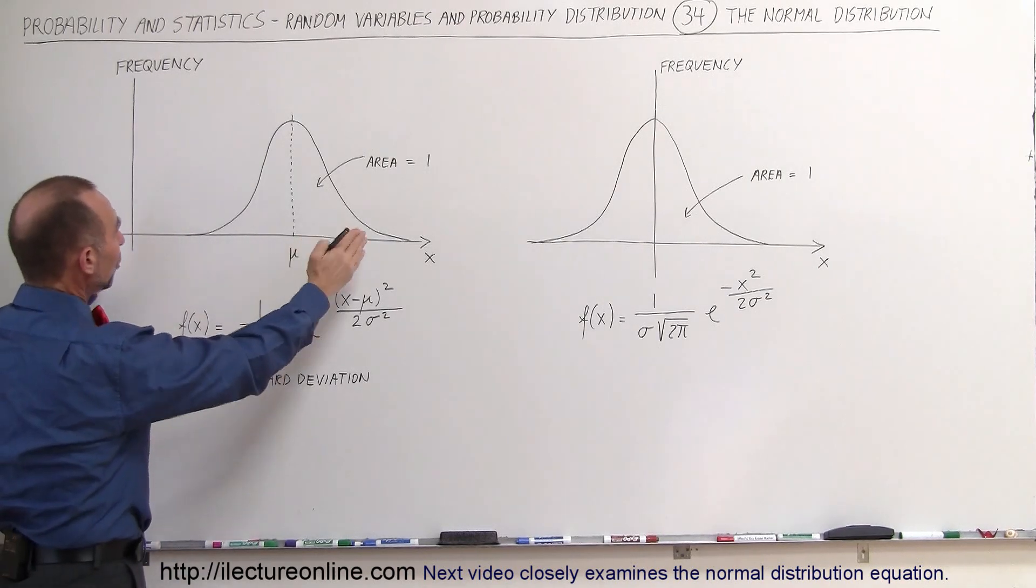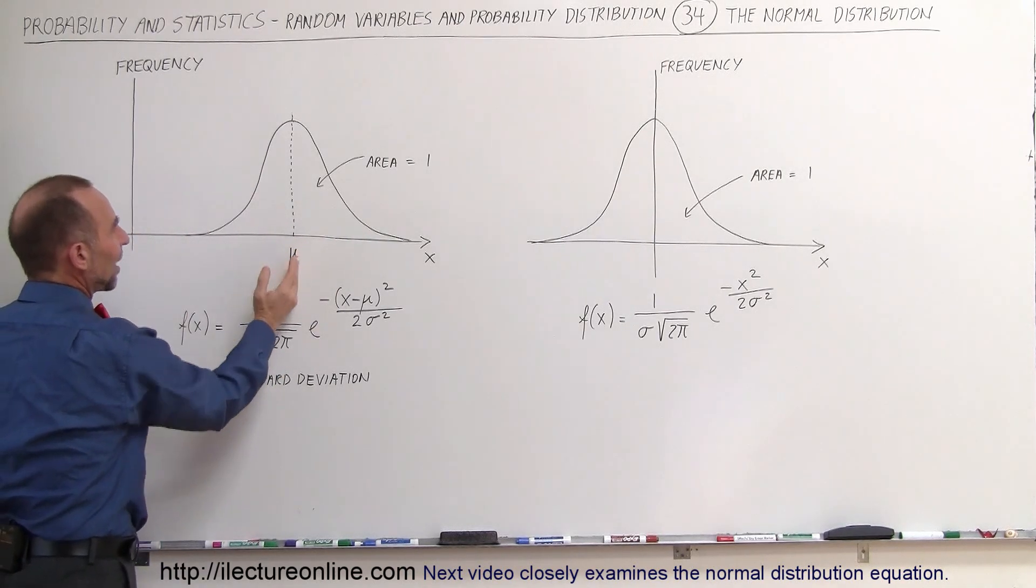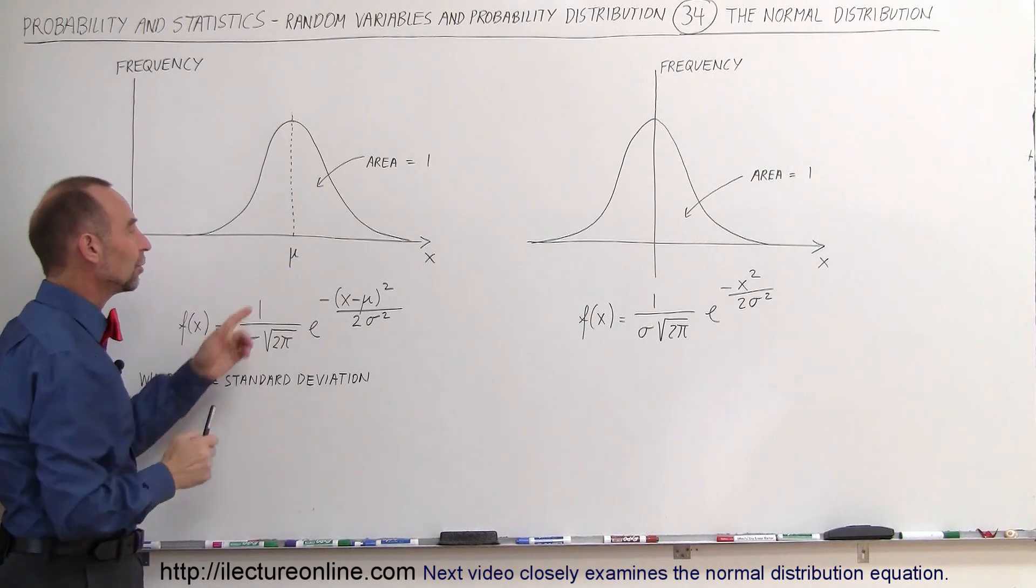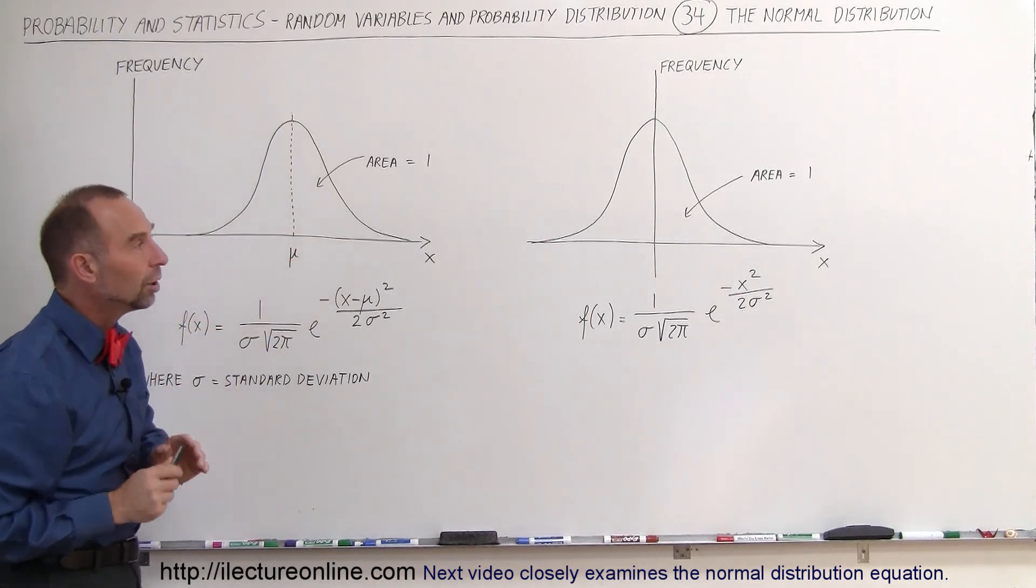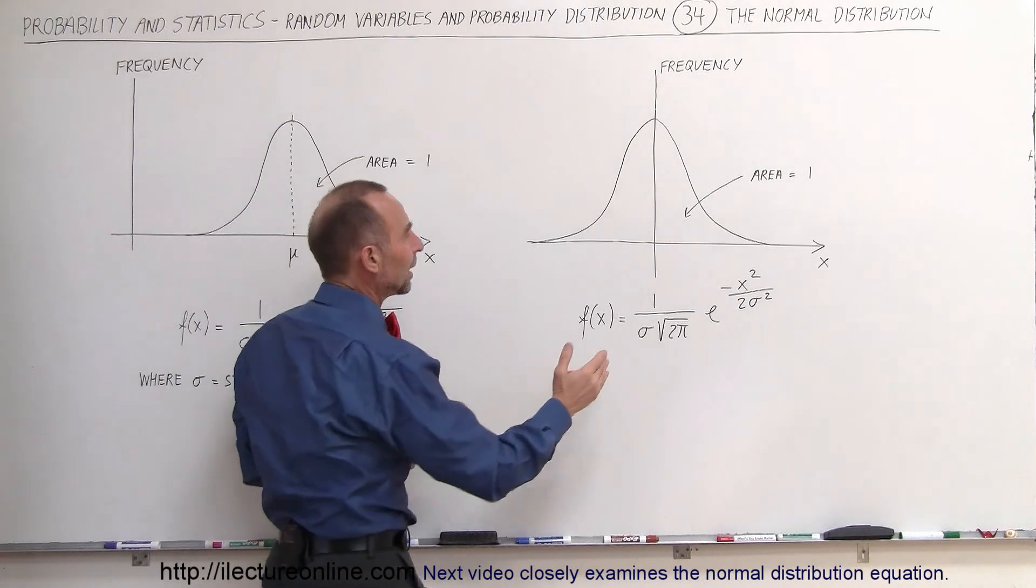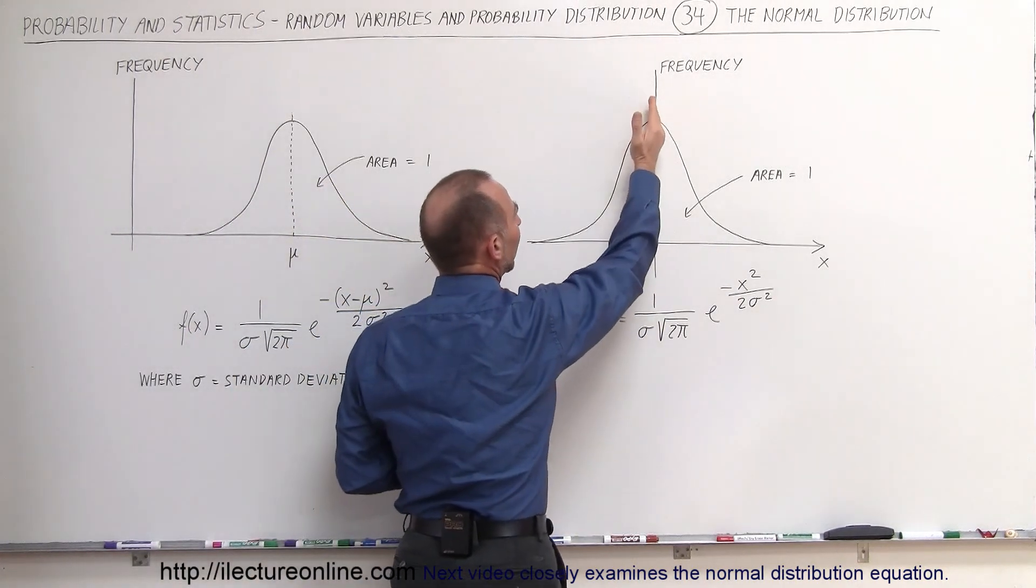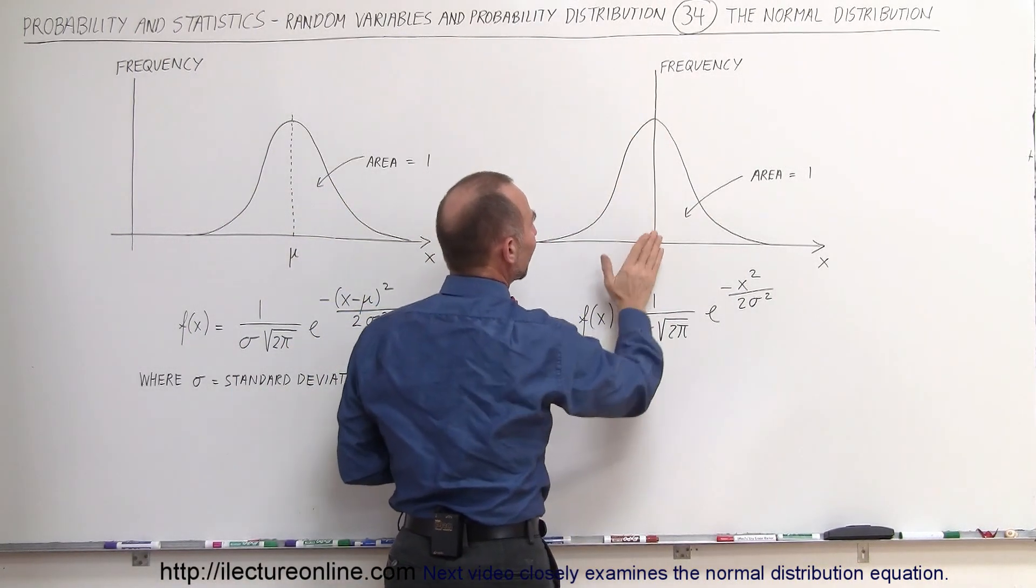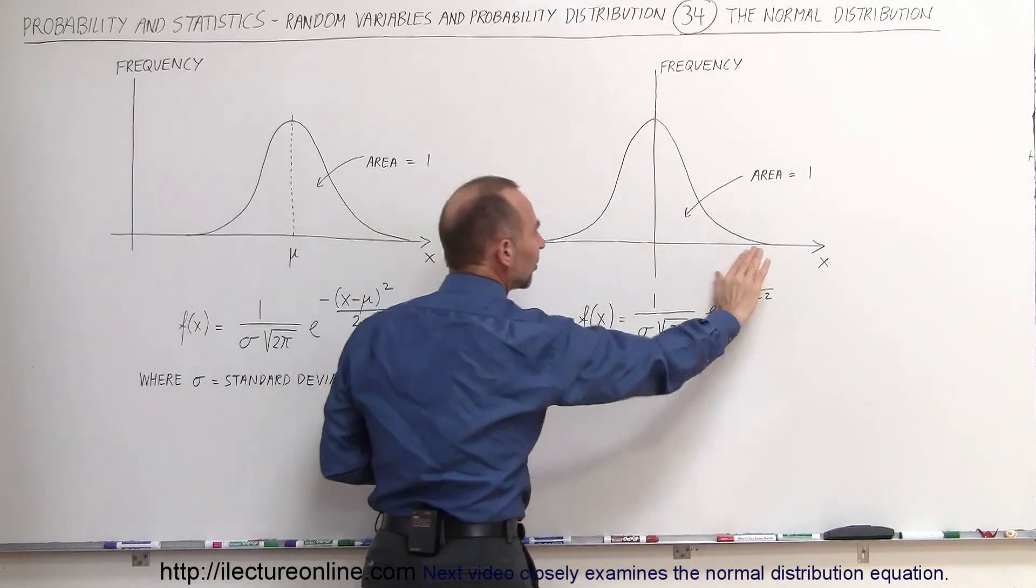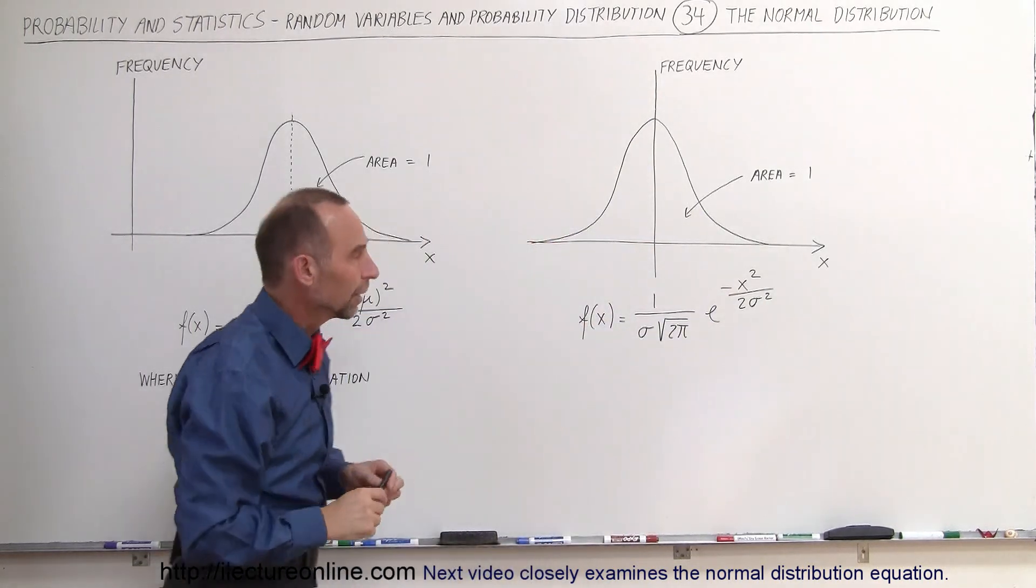Notice we can have a normal distribution like this where the average value is indicated by this number right here. There's a certain value for x. Or we can have it situated in such a way that the average value falls right on the y-axis, the frequency axis, so that we have a negative side and a positive side to our curve.